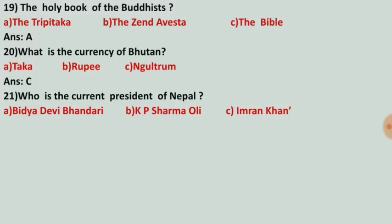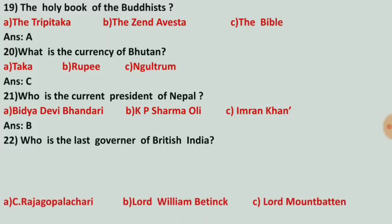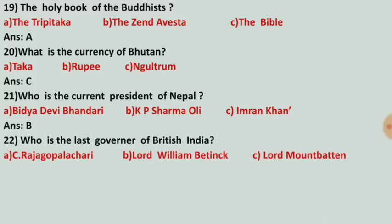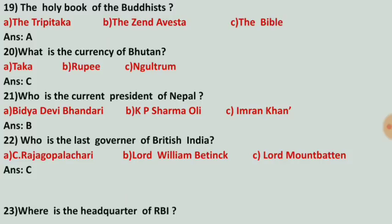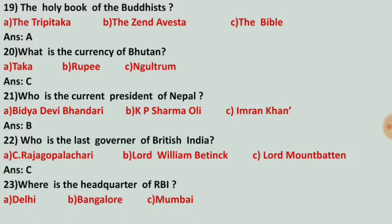Who is the current president of Nepal? Options are Vidya Devi Bhandari, K.P. Sharma Oli, and Imran Khan. The correct answer is number B, K.P. Sharma Oli. Who is the last governor of British India? The correct answer is number C, Lord Mountbatten is the last governor of British India.